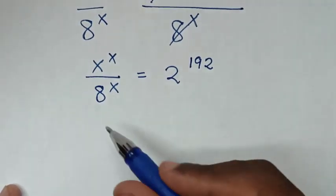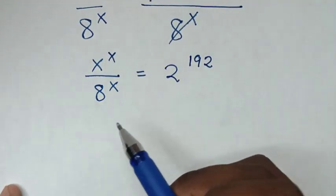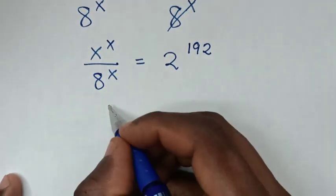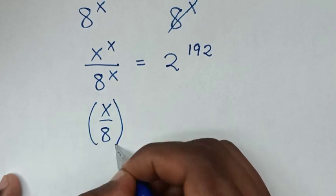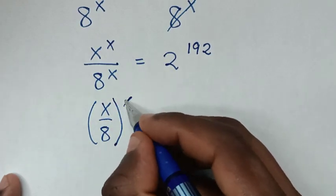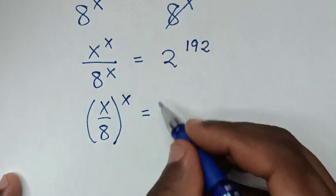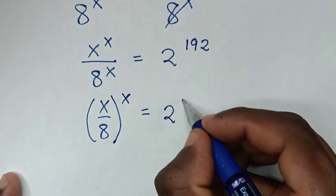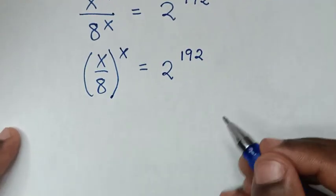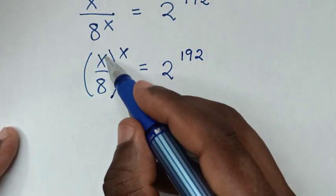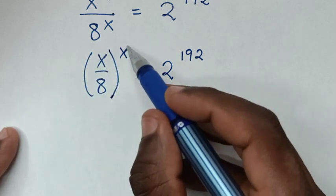Then from here, the base of x over 8, raised to the power of x, is equal to 2 power of 192. We will make it have the same power of 2 power of 192.